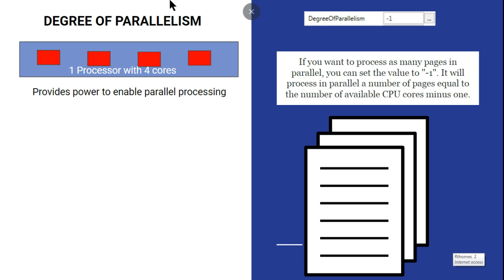So if you put minus one, it is going to utilize the maximum number of available cores minus one. If you put one, or if you put two, you are directly telling the system to utilize only two processors, even though four cores are available. If you mention six but only four cores are available, it will not exceed the maximum — it will only utilize available cores minus one, which would be three.